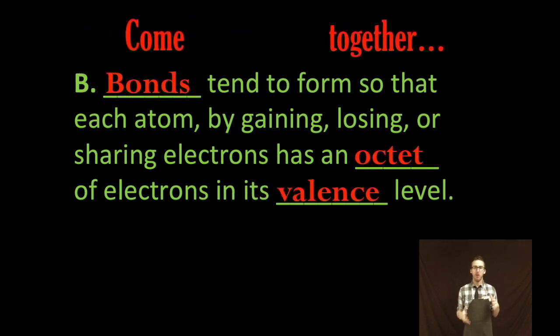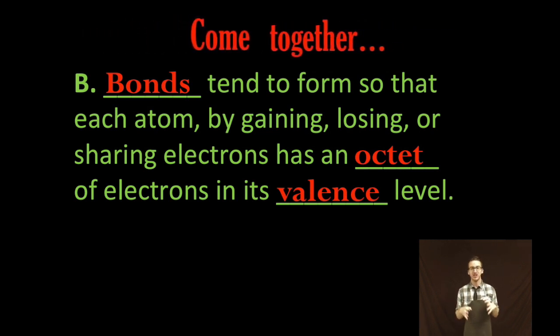And it's important to note that these bonds tend to form so that each atom, by gaining, losing, or sharing electrons, has an octet of electrons in its valence level.